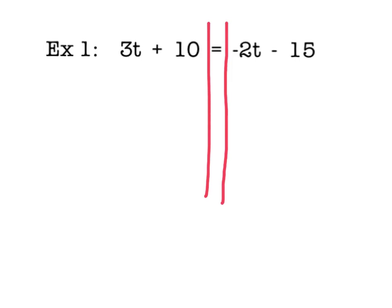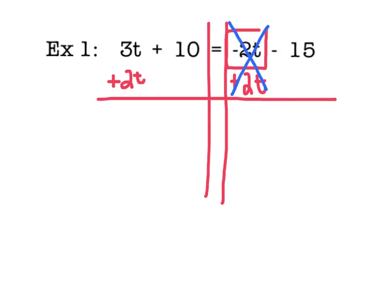I'm going to try to get all of my terms that have a variable, the t's, all to the left side. That means I need to get rid of negative 2t. The opposite of negative 2t is positive or plus 2t. So on the left side, I will also do plus 2t. Notice I'm putting that directly underneath the 3t because those are like terms, so they're the ones that will get combined.